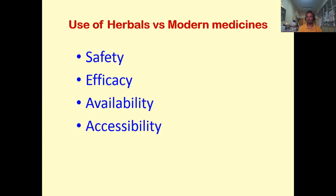The second feature is efficacy — herbs can cure many diseases for which we don't have modern medicaments. Third is availability — they are available in plenty, and you don't have to depend on extensive production units like modern medicines. Fourth is accessibility — everybody has access, even in tribal villages where medicinal plants are found in and around and can be directly taken and consumed as a drug. These four features make herbals more preferred over modern medicines.